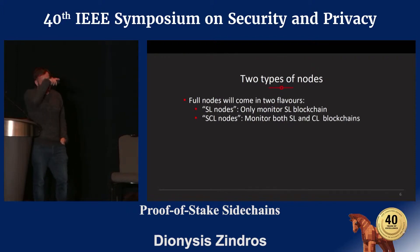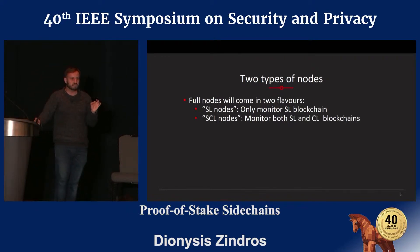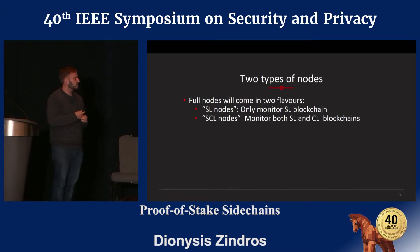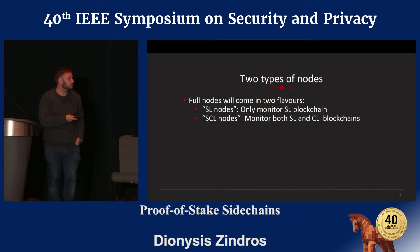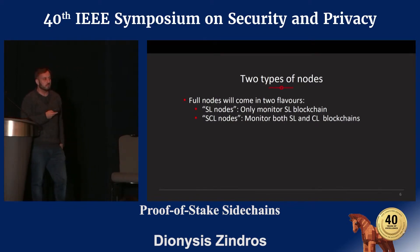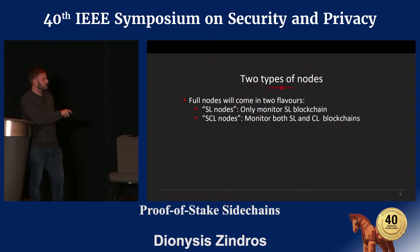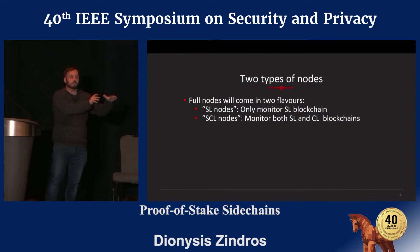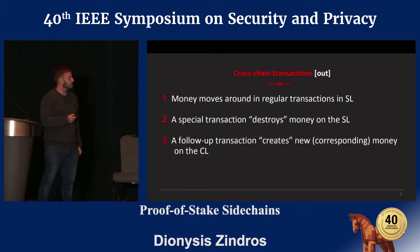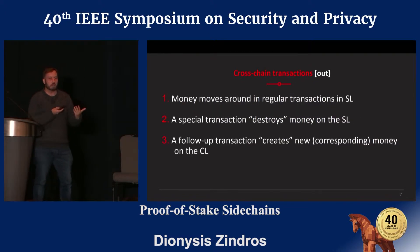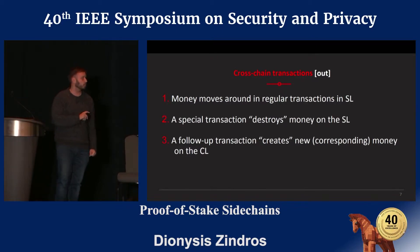We propose two types of nodes. The first is a settlement layer node, which only looks at the settlement layer. The second is an SCL node — a settlement and computational layer node — and these nodes monitor both blockchains. If somebody is interested in running on the computational layer, their node can connect to both. But if they're just settlement layer nodes, their code is really simple and only looks at the settlement layer blockchain. The challenge is how do we move money in and out when these miners don't necessarily look at both blockchains.